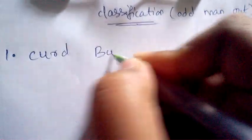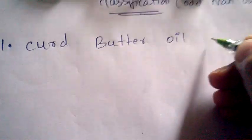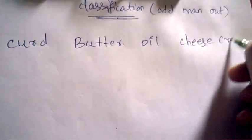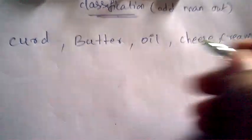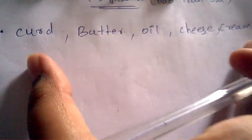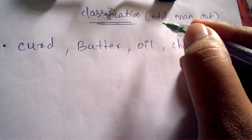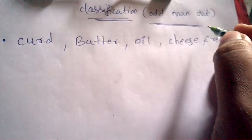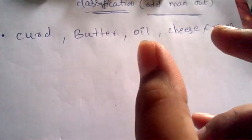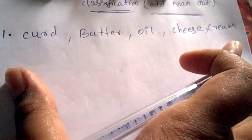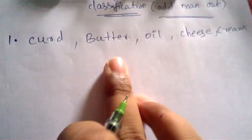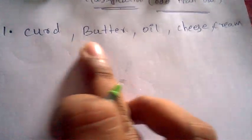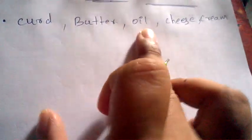Take this example: curd, butter, oil, cheese, and cream. These are five options given to us. Out of these, we have to find the odd man out — the option which is quite different and unique from the remaining options. We have to pick it out, and that will be the final answer. Let's analyze the options: curd, butter, oil, cheese, and cream.